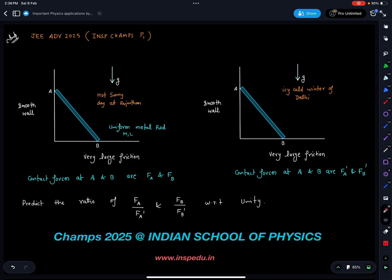And here in this case, contact force at A is given as FA, here it is given as FB, here it is FA' and here it is FB'. So now we have to predict on this ratio whether it will be more than 1 or less than 1 or equal to 1.